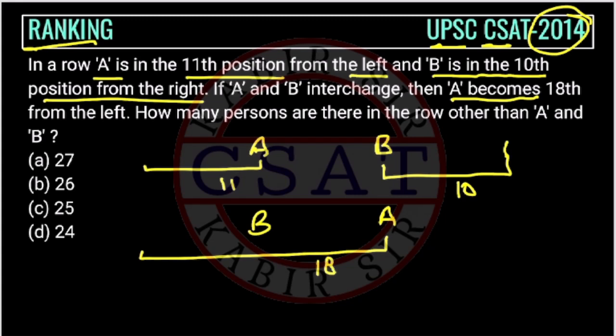How many persons are there in the row other than A and B? So first we need to find the total number of people. For total number of people, I told you one formula: L plus R minus 1.